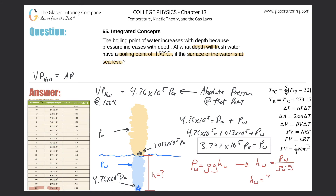Plugging in: the pressure of the water is 3.747 times 10 to the 5 Pascals, divided by the density of fresh water which is 1000 kilograms per cubic meter, multiplied by the gravitational acceleration of 9.81 m/s². That works out to be about 38.2 meters. So the depth of the water is approximately 38.2 meters.